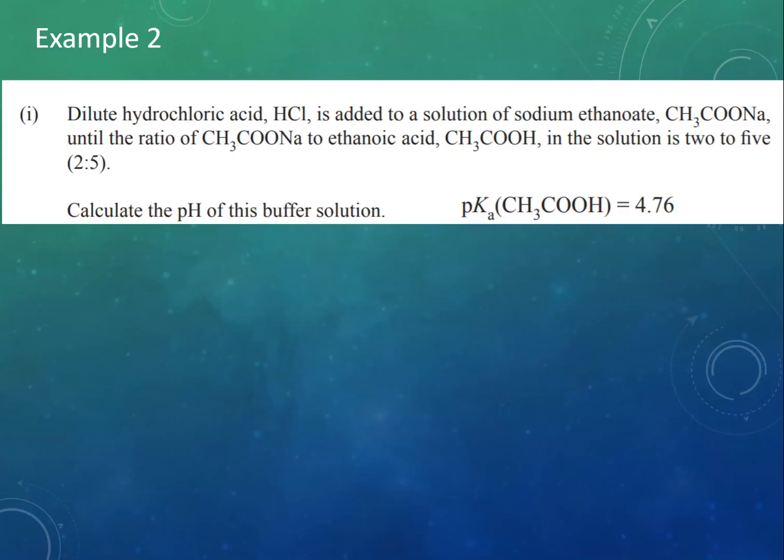Here's another example. This was another NCEA question from 2019, where dilute hydrochloric acid is added to a solution of sodium ethanoate until the ratio of sodium ethanoate to ethanoic acid is two to five. So in this case, you're not given any concentrations, but you are given a ratio of base to acid.